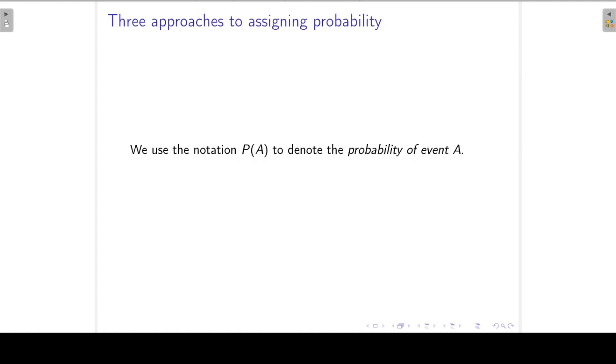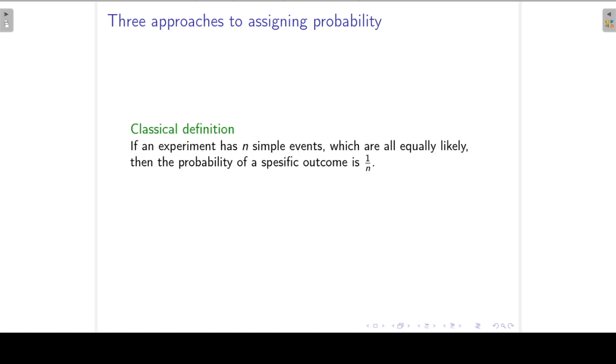Okay, some more notation. P of A denotes the probability of event A. Now what exactly do we mean by the probability of an event? There are three approaches to determine the probability of a certain event. The first approach is the classical definition. So this is when an experiment has n simple events, which are all equally likely, then the probability of a specific outcome is just 1 over n.